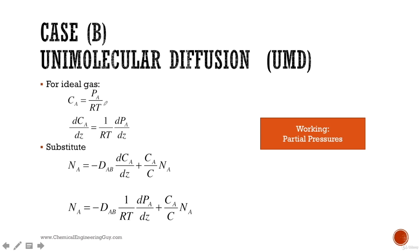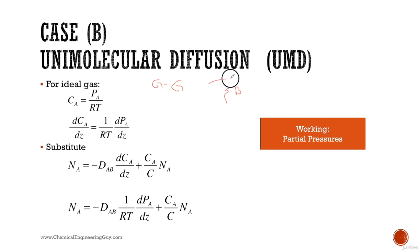We are using the ideal gas assumption. We are analyzing the simplest case: gas-to-gas, where benzene vapor diffuses into air. According to the ideal gas law, we can express concentration in terms of partial pressures. So we're going to work with partial pressures, since it's easier to calculate the partial pressure of A in air than the concentration of A directly.